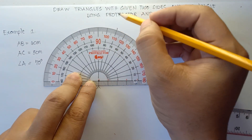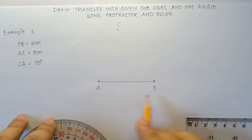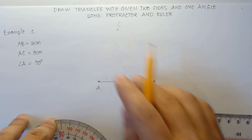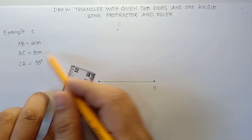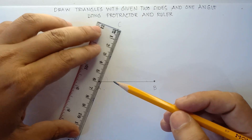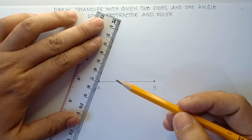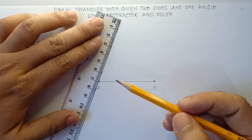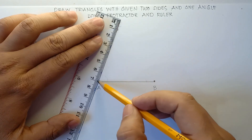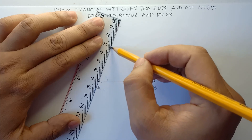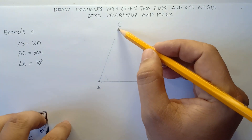So therefore, this will be point C. This is A, this is B, and this will be C. Then you sketch AC, which is 5 centimeters. From 7 to 2 on the ruler, that would be 5 centimeters. This line will be our reference for the angle.